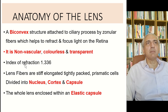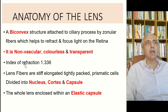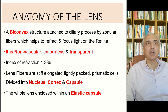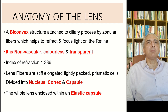The lens is bi-convex — convex anteriorly and posteriorly — and is attached to the ciliary processes by zonular fibers, which help to refract and focus light on the retina. It is non-vascular, which is very important because it has to be colorless and transparent. The refractive index is 1.336.